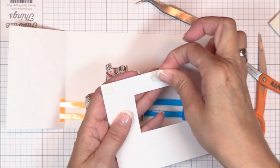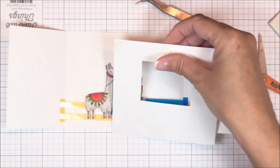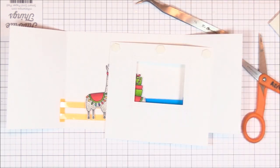Once the llamas are in place, I can remove the interior aperture panel and adhere it to the inside of the card base with a double layer of foam squares.